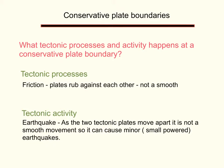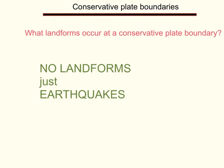The tectonic processes and activity that happen at a conservative boundary are: tectonic processes is friction and pressure — the plates rub against each other, it's not a smooth movement. And the tectonic activity is earthquakes only, no volcanic activity. As the two tectonic plates move, it is not a smooth movement, so it can cause minor, small-powered earthquakes. Unlike the other three plate boundaries, conservative plate boundaries do not have any landforms. They only have tectonic activity, and that is earthquakes.